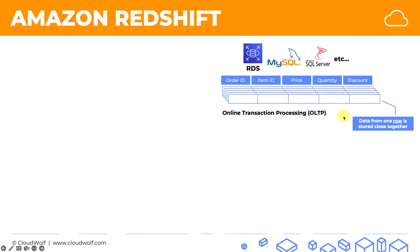That makes it easy to read and write rows into the data. If you have an online store and more transactions are coming in, you're just adding more transactions, or you need to read a specific row, look up an order ID and find the price — it'll be quite easy because that data is stored close to each other. However, this type of data storage, which is called online transaction processing, is not efficient for analyzing data.